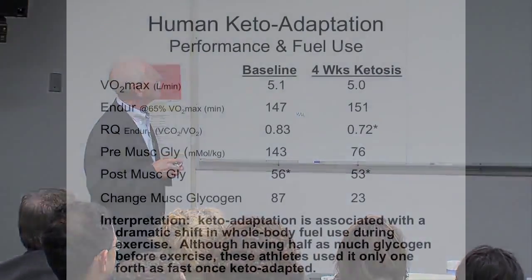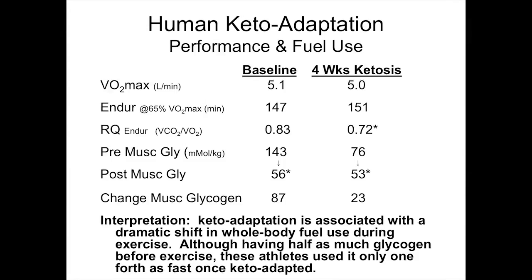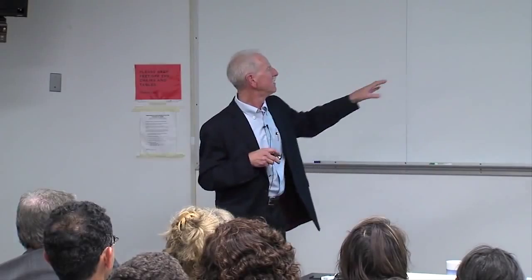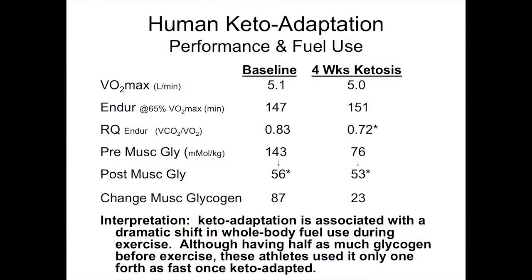Here's the data. Their VO2 max peak aerobic power before the intervention was 5.1 liters per minute — translating to 1,800 calories of energy expenditure per hour. Four weeks later, their VO2 max was unchanged at 5.0. So four weeks without any carbohydrate and peak aerobic power was unchanged. We had them do endurance exercise to exhaustion at 65% of VO2 max — that's 930 calories per hour on a stationary bike. They went for 147 minutes on their baseline high-carb diet and 151 minutes on the low-carb diet. These numbers are statistically no different, so there was no loss of peak aerobic power and no loss of endurance performance.